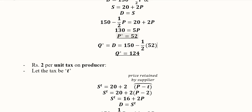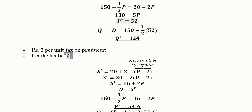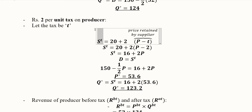We will experiment by introducing a two rupees per unit tax on the producer. We are imposing the tax on the producer; let us assume this tax is represented by the notation t. The supply function will be affected because we are talking about the producer. In the first step, the price will be affected in a negative way because the producer has to pay the tax after receiving the price, so we subtract it: the difference p minus t.